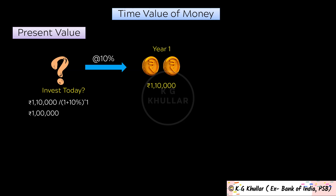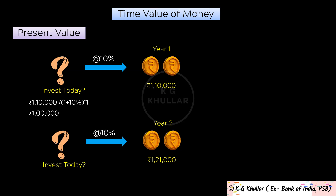Similarly, what will be the investment amount if you need to get Rs. 1 lakh 21,000 after 2 years assuming 10% rate of return? Here also we proceed the same way: Rs. 1 lakh 21,000 divided by 1 plus 10% raised to the power 2 equals Rs. 1 lakh. In future value we multiply the initial investment by 1 plus rate of return, while in present value we are just doing the opposite — dividing the future amount by 1 plus rate of return.